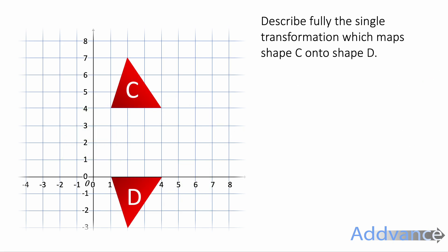Now next one, describe how we get from C to D. You should see this is a reflection. It is being flipped. So this is a reflection in the line Y is equal to 2. Because Y equals 2 is the line halfway between those two shapes.